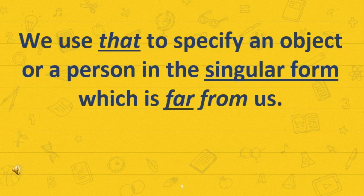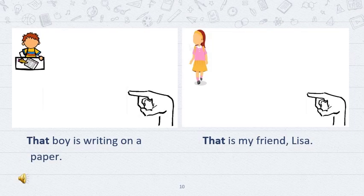We use 'that' to specify an object or a person in the singular form that is far from us. For example, that boy is writing on a paper. As you can see, the pointed arrow is really far from that boy. That's why we use 'that' for it.